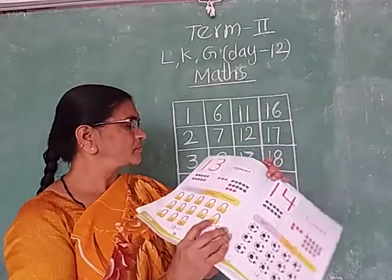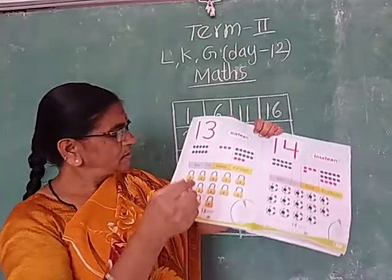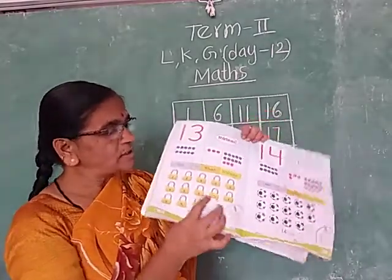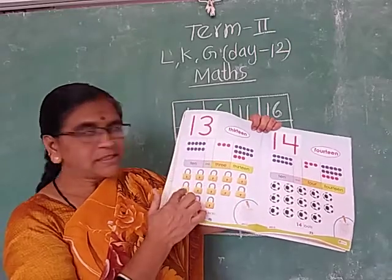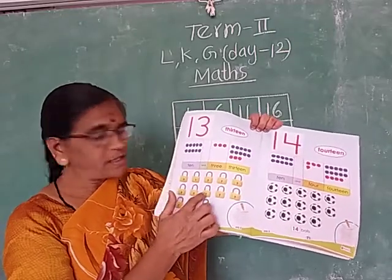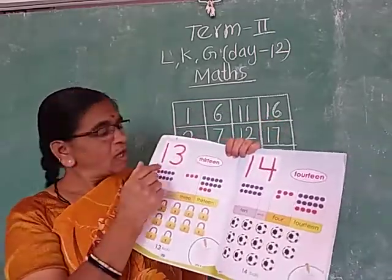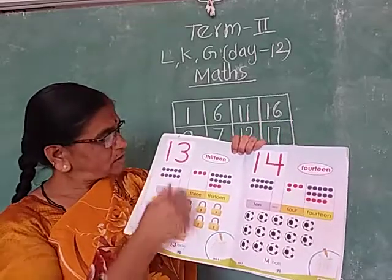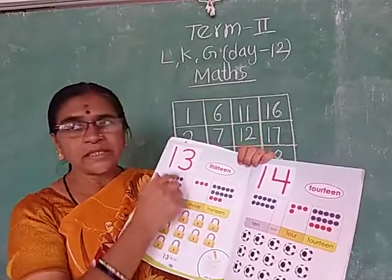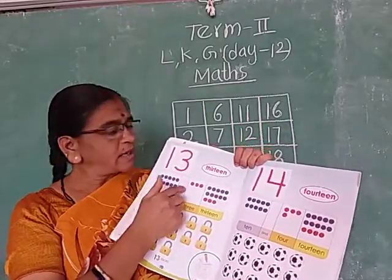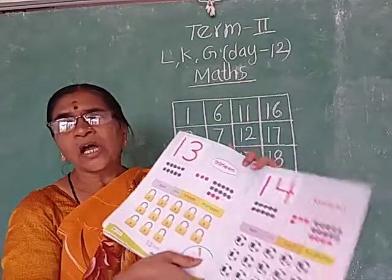Next number 13. How many locks are there here? 1, 2, 3, 4, 5, 6, 7, 8, 9, 10, 11, 12, 13 — 13 locks. 10 and 3 makes 13 — 13 locks.